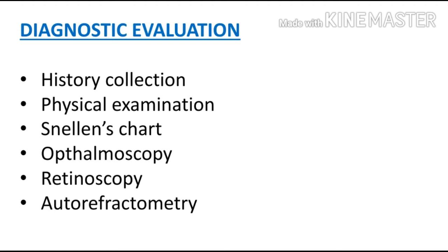Sabse pahle hum patient ki proper history lenge ki usse refractive error kab se hai, progressive hai ya gradual loss of vision ho raha hai. Uske baad physical examination karenge, torchlight examination karenge, Snellen chart se vision test karaenge, ophthalmoscopy, retinoscopy aur AR karenge. Ye saare hamare diagnostic evaluation mein aate hain.